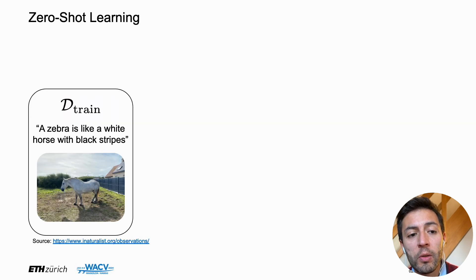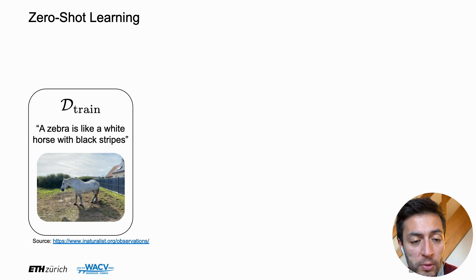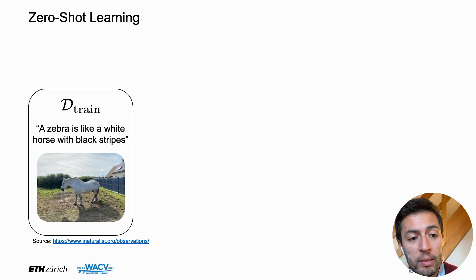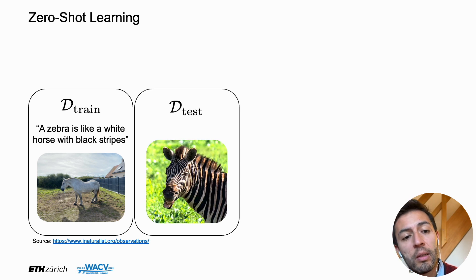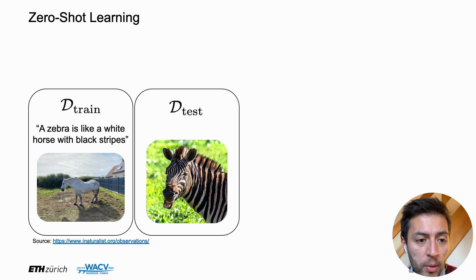Let's talk about zero-shot learning. Assume that you have an input dataset that has, for example, images of horses, as you see here in the image, and you have some information that tells you that a zebra is like a white horse with black stripes. So once you get a test sample of a zebra, you should be able to have a model that can recognize this input image by using both the input information from horses and the side information you were given.